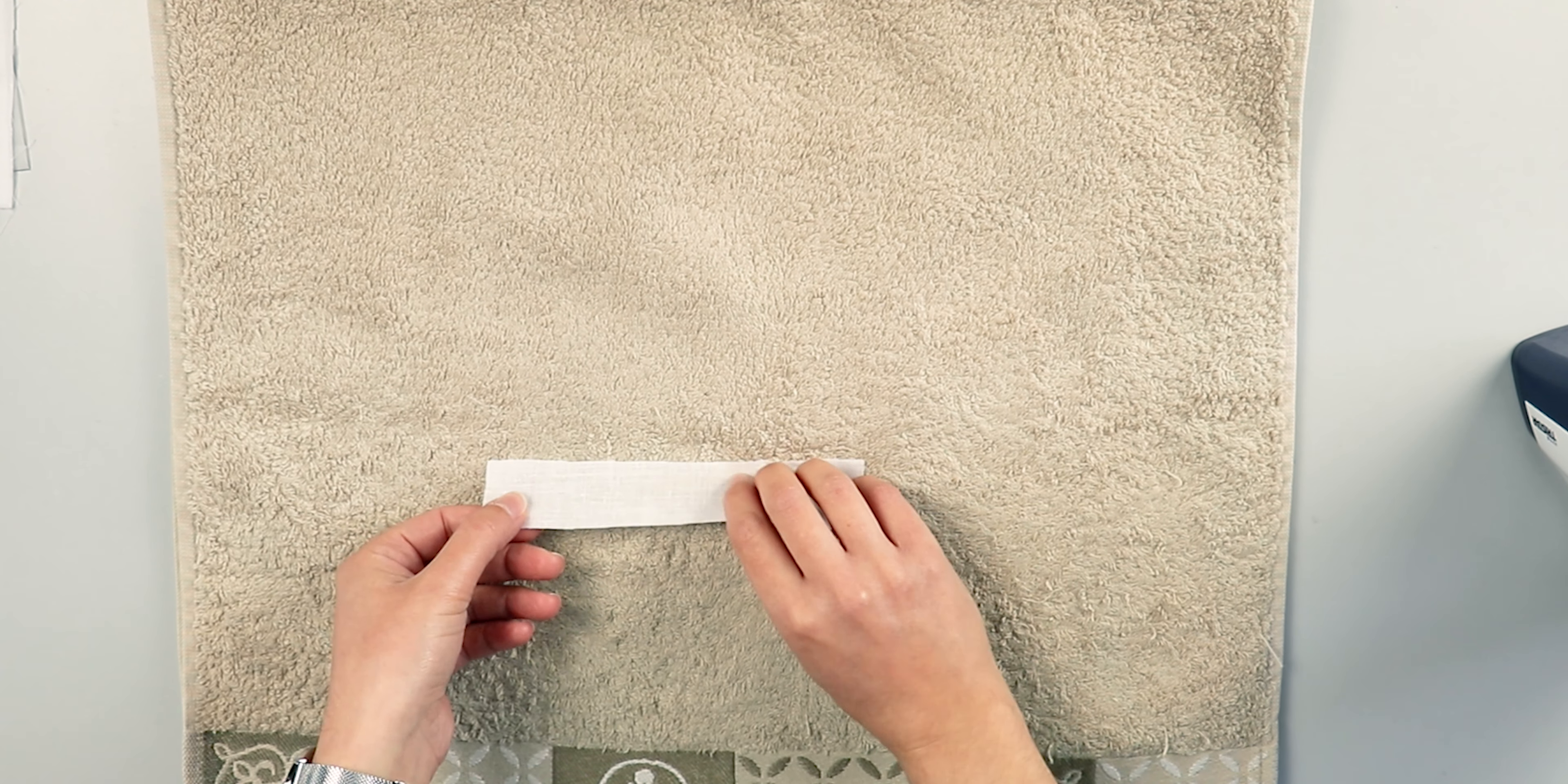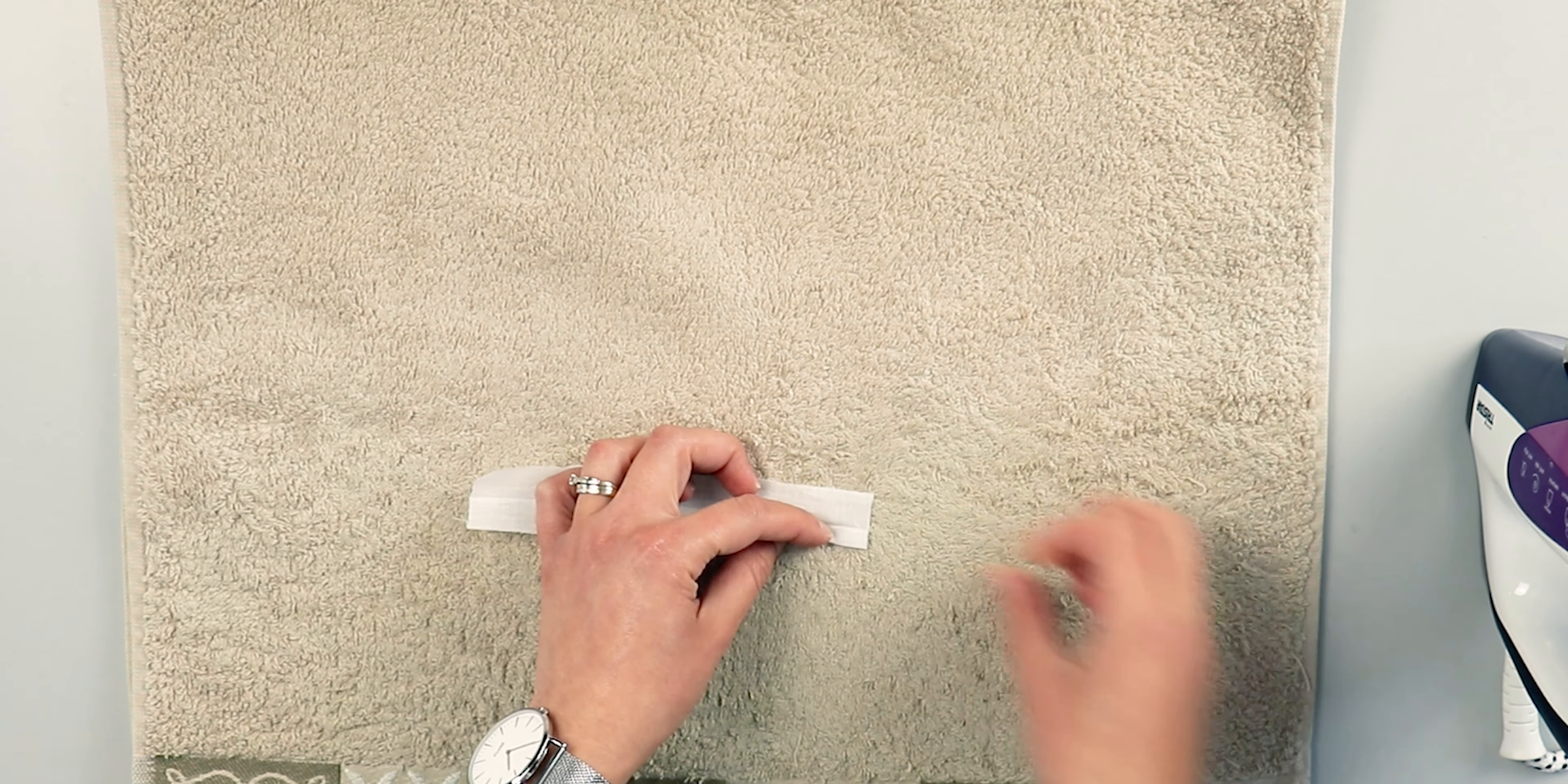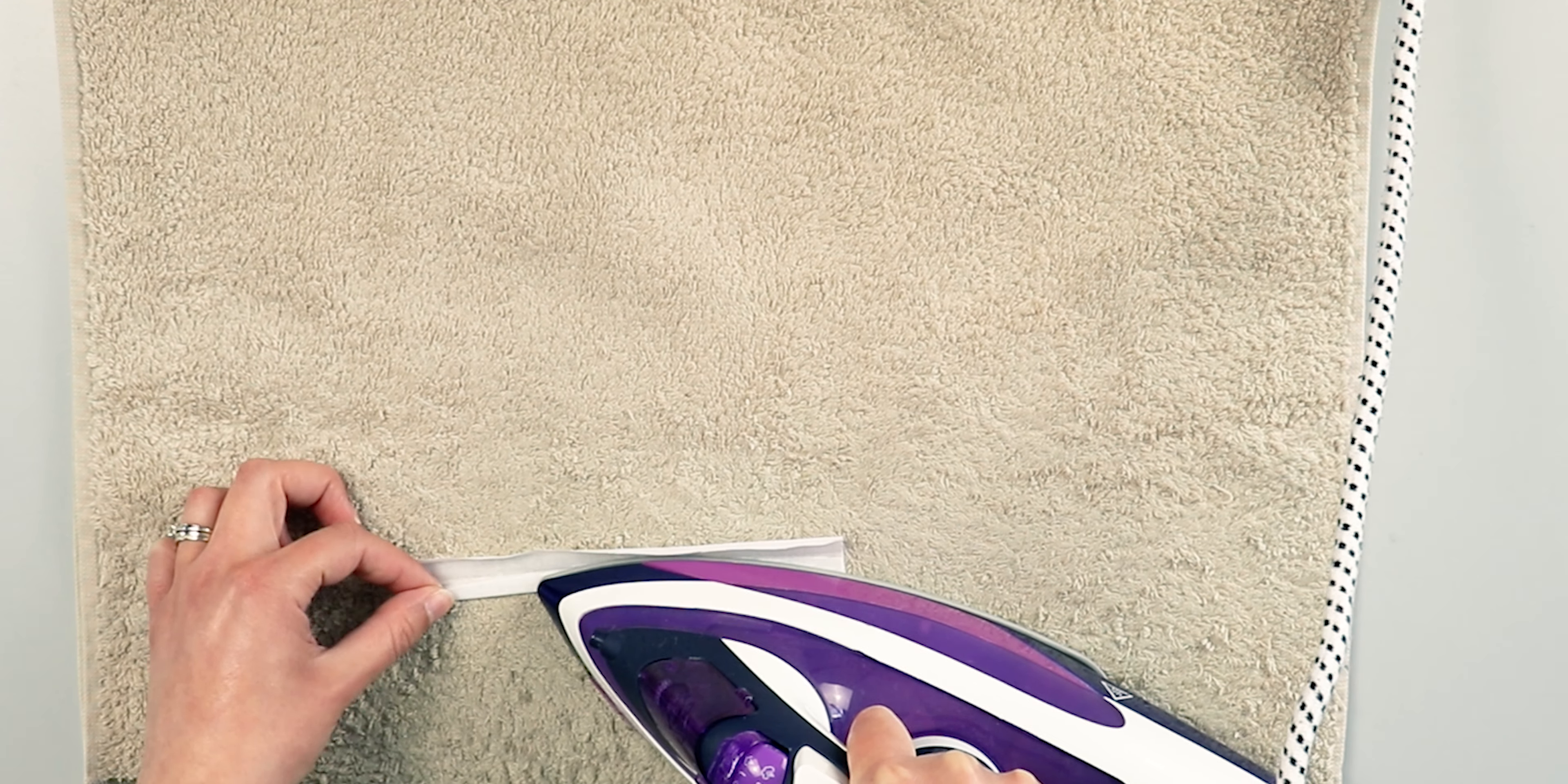For the sleeve binding, fold the strip in half lengthwise to make the middle fold. Next, fold the ends into the middle crease and iron. Open up the sleeve binding.